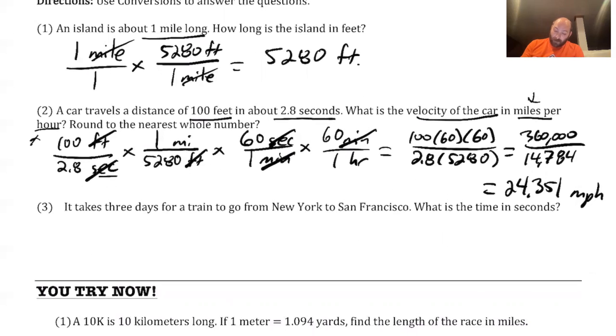All right, last example here. It takes three days for a train to go from New York to San Francisco. What is the time in seconds? So I have three days. It's not quite a ratio because I'm not comparing the number of days here to anything else. I do want to get down to seconds.